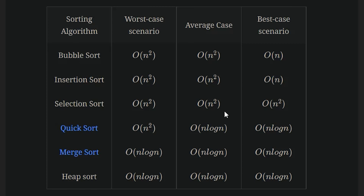A couple of interesting things to mention: for bubble sort and insertion sort, the best case scenario is actually O(n), whereas the best case for the quick algorithms is going to be n log n. So if your input list is already sorted, the way these two first algorithms work is that they only have to go through the list one time in order to realize that it's already sorted.